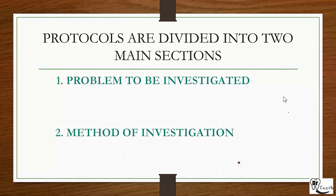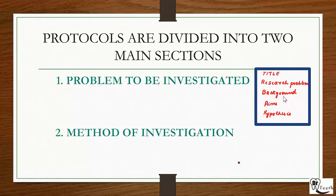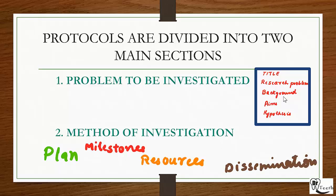These are problem to be investigated and method of investigation. Problem to be investigated has project title, research problem, background, aims, and hypothesis. Method of investigation has plan of the investigation including sample size calculation and statistical method, project milestones, resources required, and dissemination of the result.